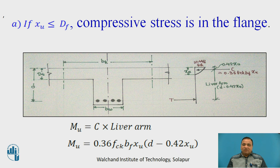If Xu is less than or equal to Df, compressive stress is in the flange. Here you can find a section of a T-beam. Bf is effective breadth of flange which acts as a beam. This is tensile steel. Df is depth of flange that is depth of slab. Here you will find the entire Xu is within the Df. Xu is less than Df.